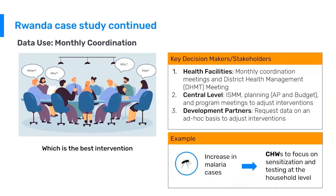Another key point of the Rwandan case study is how they conduct monthly coordination. They have outlined a very specific standard operating procedure with key decisions and stakeholders defined. Health facilities hold monthly coordination meetings; districts do the same. At central level there are meetings for planning, policy making, and adjusting interventions at routine frequency. They also communicate with development partners by sharing data at defined intervals — all done in a routine, standardized way.